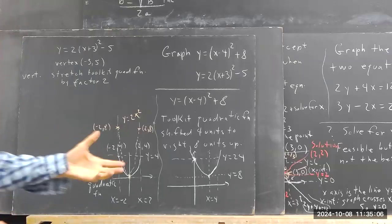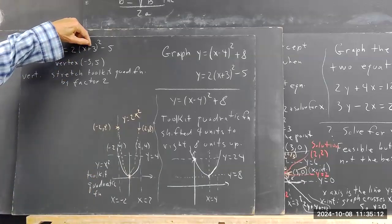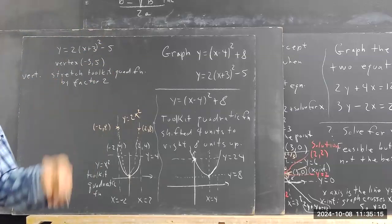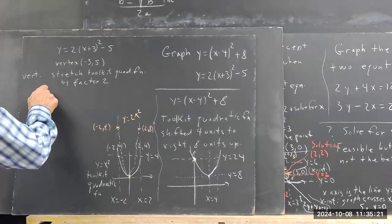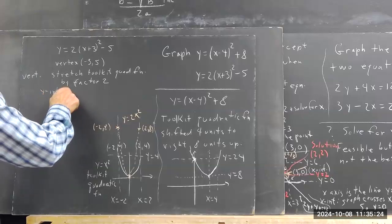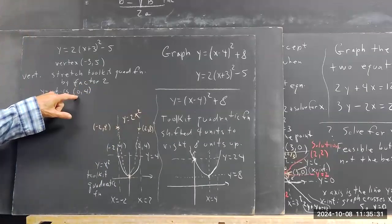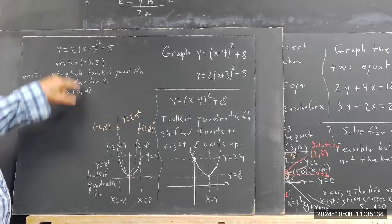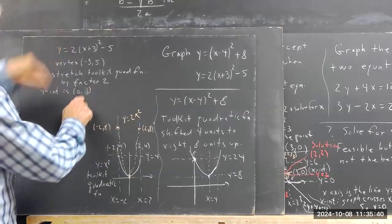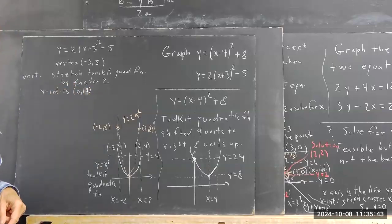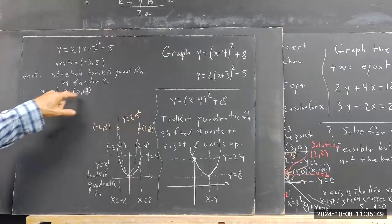What's the y-intercept? The y-intercept occurs when x equals zero. If x equals zero, we get nine minus five — wait, that's four. Actually, I made an error. We're going to square three to get nine, then multiply by two before we subtract five. So it's zero, 13.